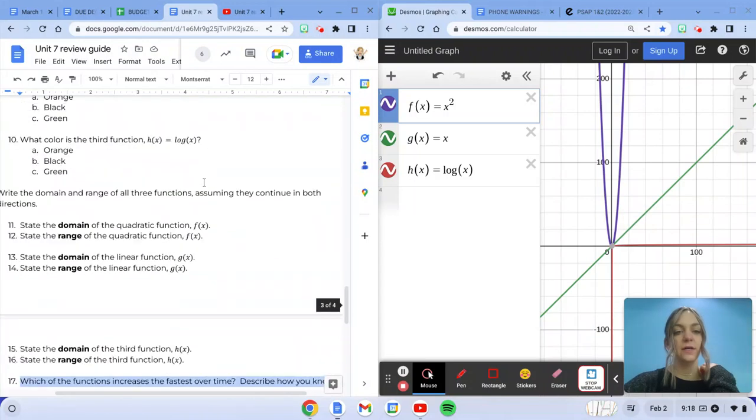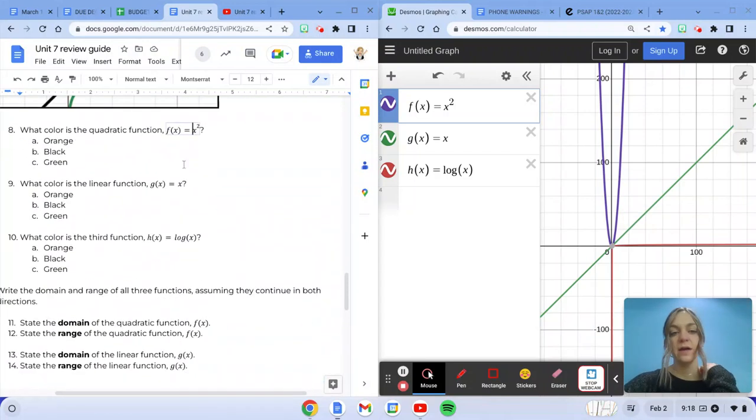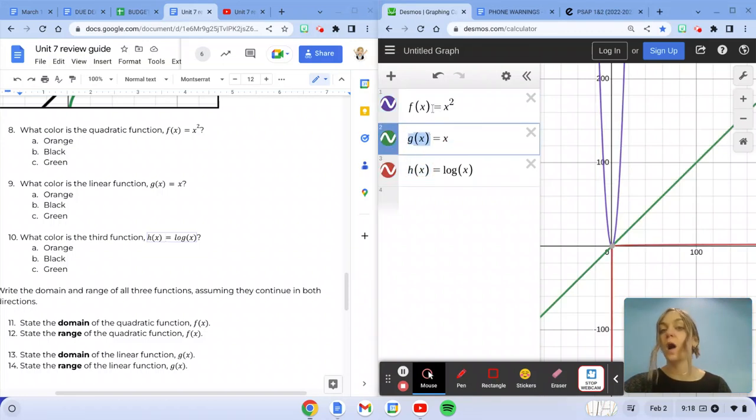So what I've done is put f of x, g of x, and h of x all into Desmos. Now this is just another way of saying y, like y equals x squared, but when we have multiple graphs, sometimes we name them with different letters so it's easier to see which graph we're referring to.